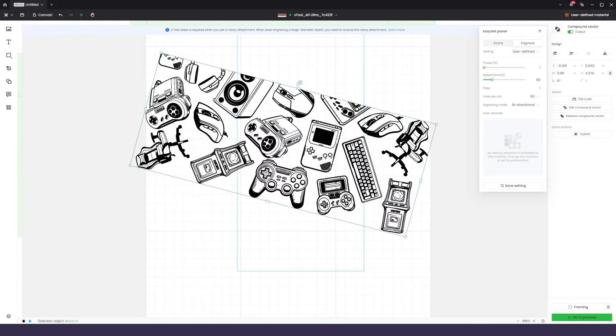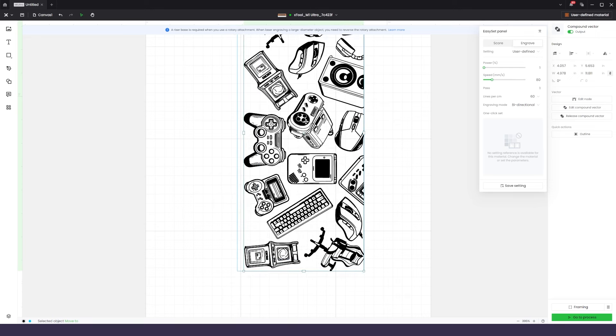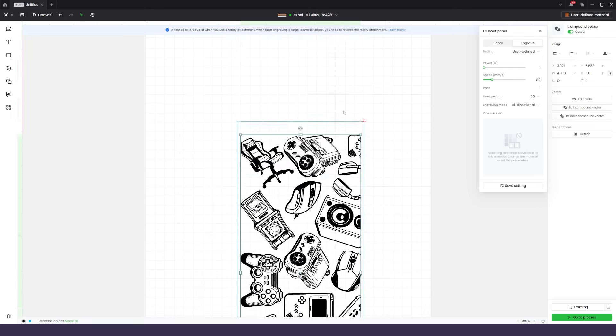With everything welded together, rotate and resize your design to fit inside the engraving area. Every tumbler is different, so if you're using one similar to mine, you'll want to account for the brackets.